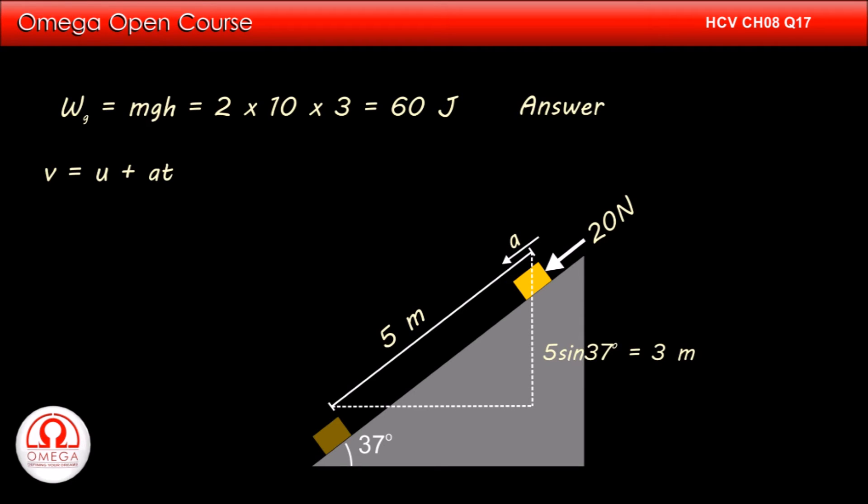Since the speed of the block is 0 and its acceleration is 10 m/s², its speed after 1 second is 10 × 1 or 10 m/s. Now, as per the work-energy theorem, work done by all forces on the block must be equal to the change in its kinetic energy.